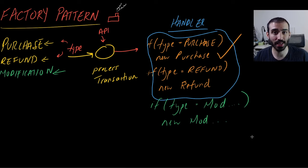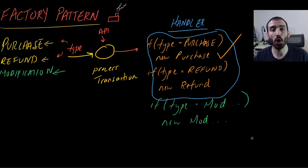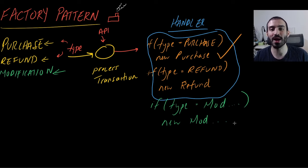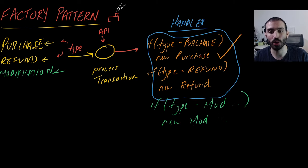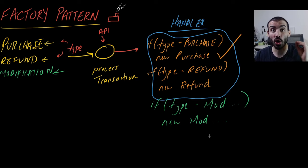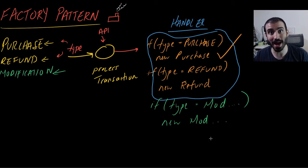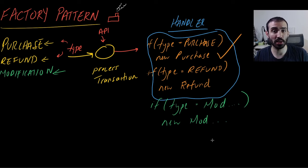The open-close principle says objects should be open for extension and closed for modification. In the context of this example: every time we want to create a new type of transaction, we need to go into this code and modify it. This violates the open-close principle because we need to go inside and modify it — we are open for modification, which is a bad thing from the open-close design principle perspective.